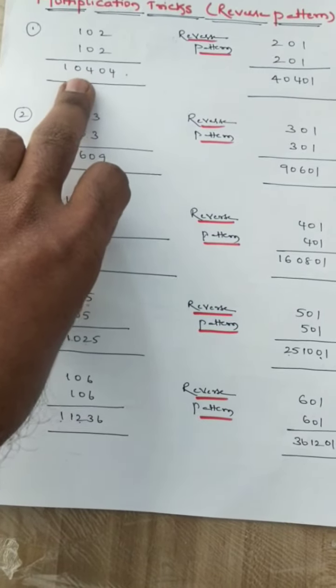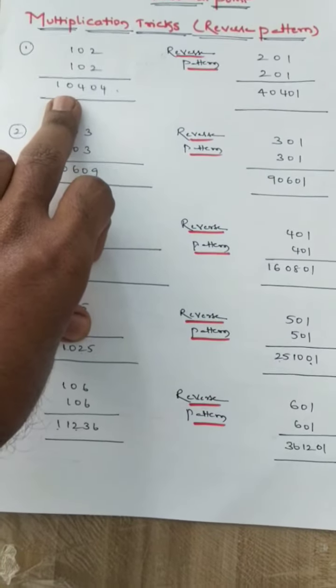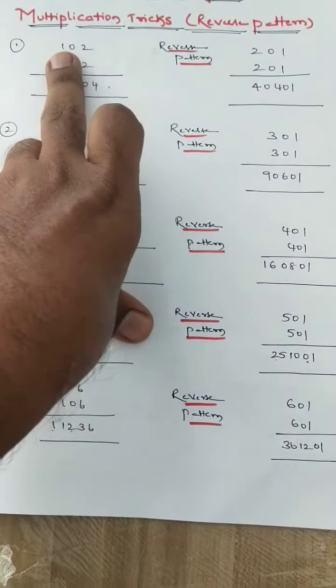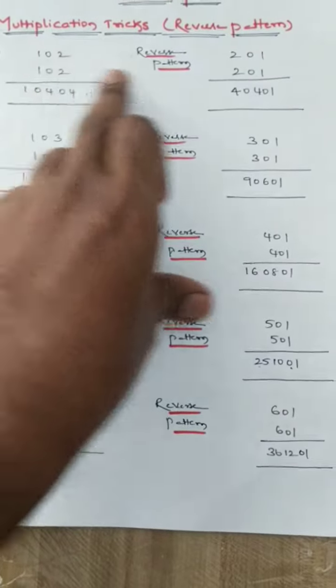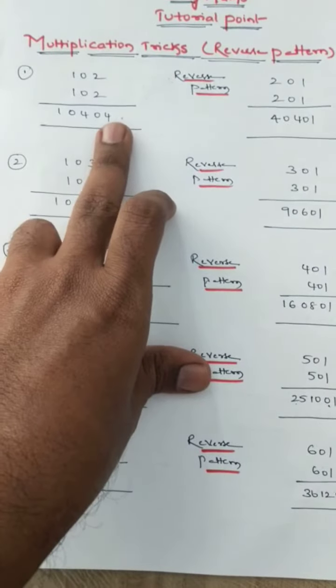What is a reverse pattern? It indicates that if you interchange the digits, 102 becomes 201. Here 102, it is 201, right? Here just you have to write the result in reverse way.